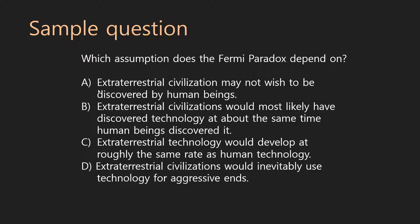Let's check A. Does this need to be true? Answer A says: extraterrestrial civilizations may not wish to be discovered by human beings. Certainly possible, and if you read the passage it's something that may have tricked you because the passage was about why aliens are not visible on Earth. But when we're looking at the details themselves, it just looks like a crazy answer — that's got nothing to do with anything. And that's how I want you to think: look at the part of the text you're supposed to be looking at. Clearly, it's irrelevant. Cross it off.